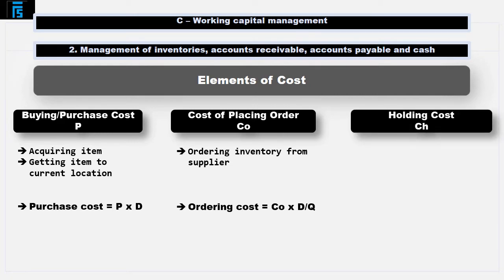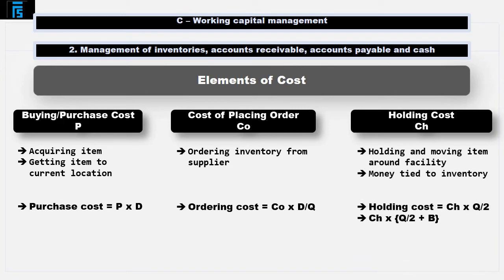Finally, the holding cost, C-H, is the cost of holding one item for one year. This will include the costs associated with holding and moving an item around the facility, and/or the opportunity cost of having money tied up in inventory, and therefore not available for other investment opportunities. The total annual holding cost will be C-H multiplied by the average quantity held, i.e. Q divided by 2, where inventory is used at a constant rate. Similarly, the average quantity held will be Q divided by 2, plus B, where B is a buffer or minimum inventory level held.